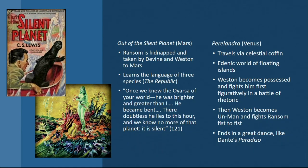In the first novel, Ransom, the main character, is kidnapped and taken by Devine and Weston to Mars. Devine will later become Lord Feverstone in That Hideous Strength, while Weston will die on Perelandra. The two of them plan to colonize other planets—an idea that has picked up steam even in our own culture, like Space Force on Netflix and the idea of boots on the moon. Because Ransom is a philologist, and some think he was modeled on Tolkien, he learns the language of the different species on the planet.